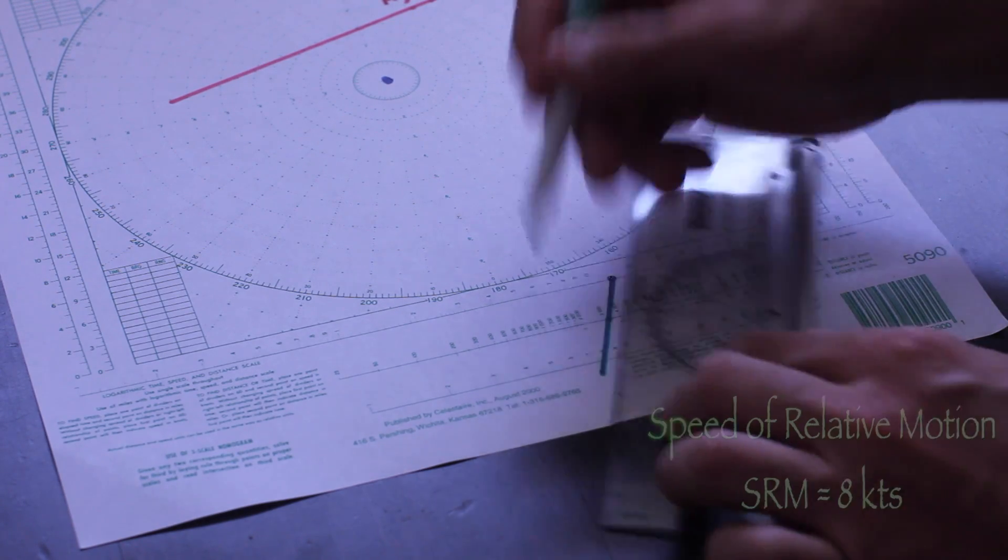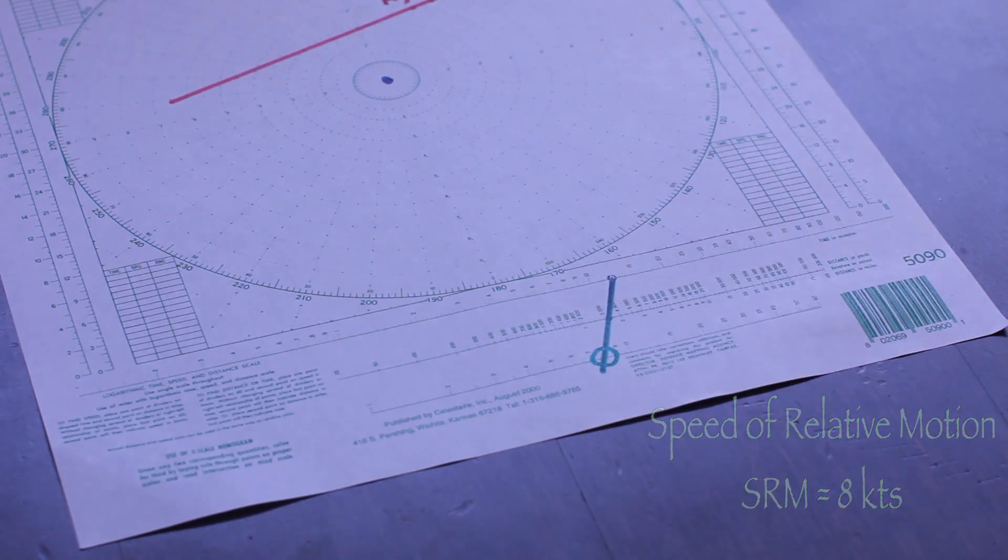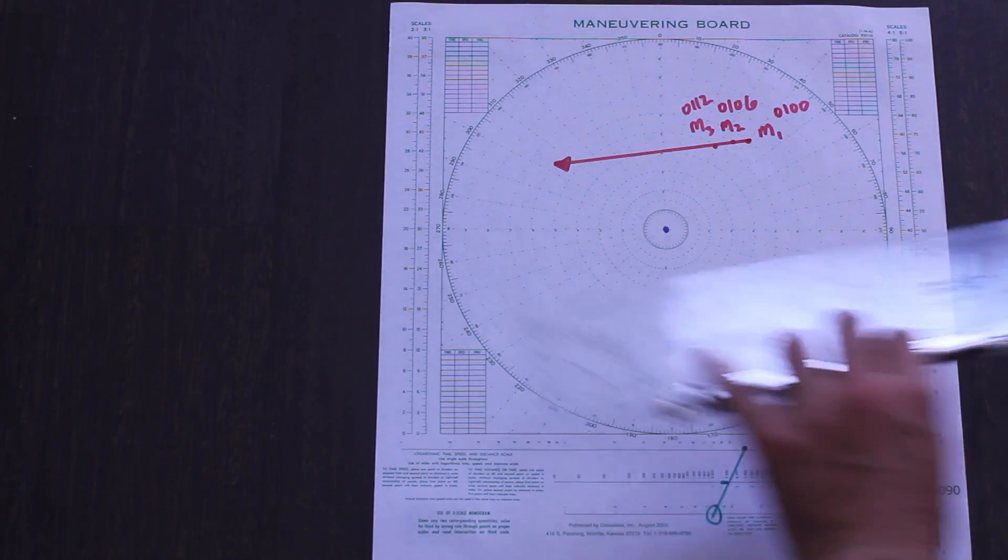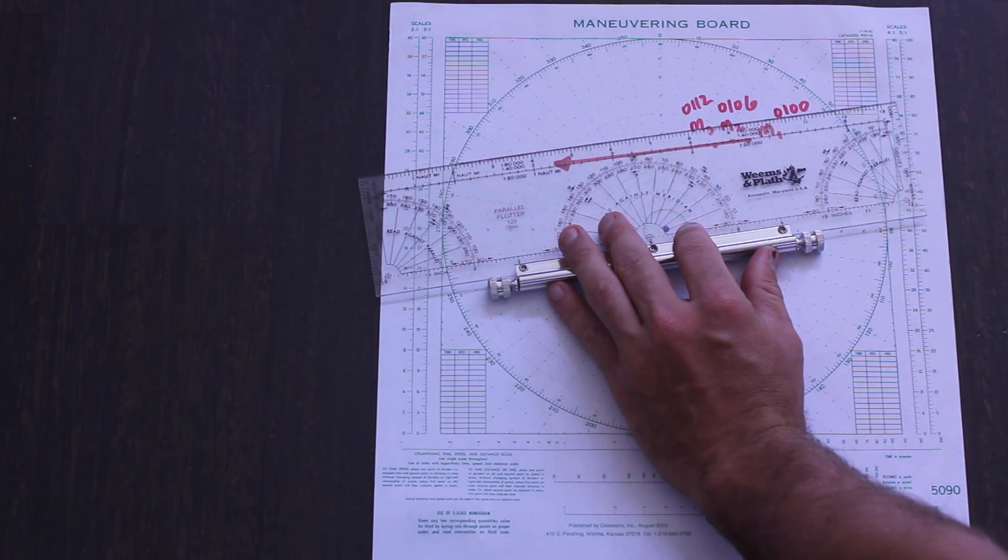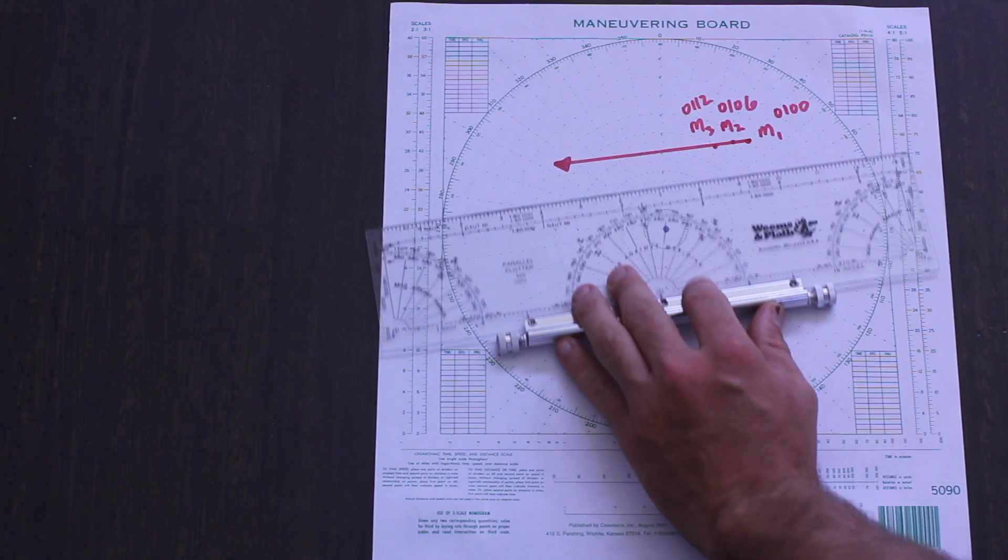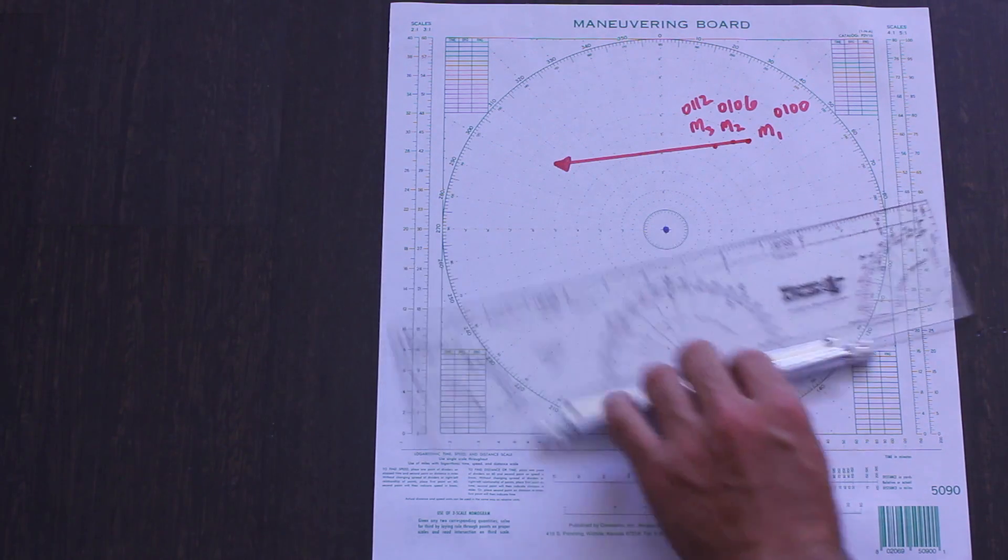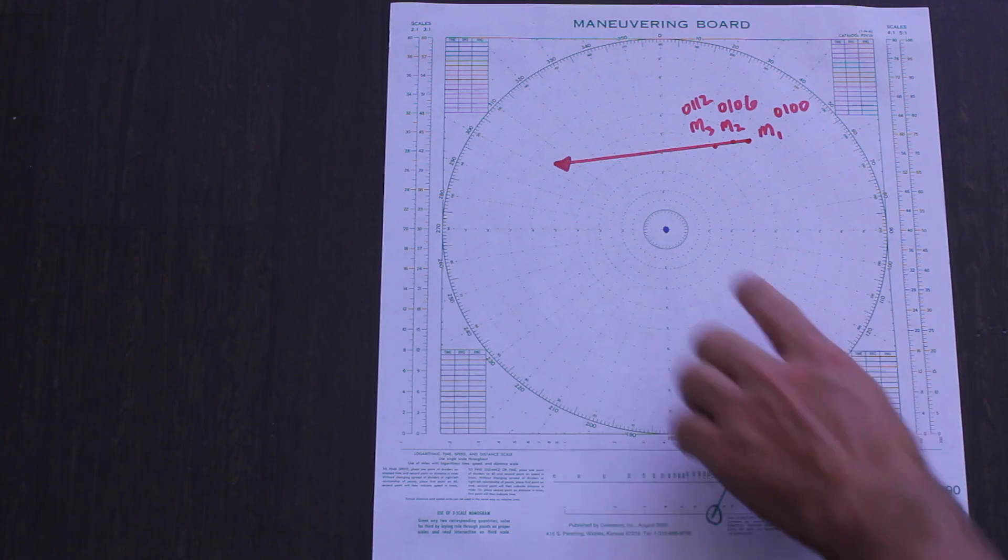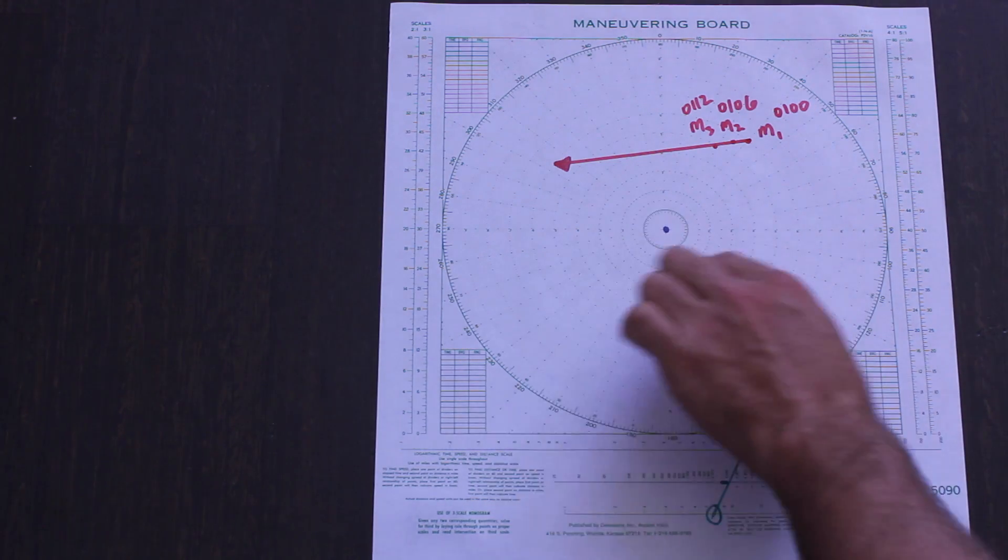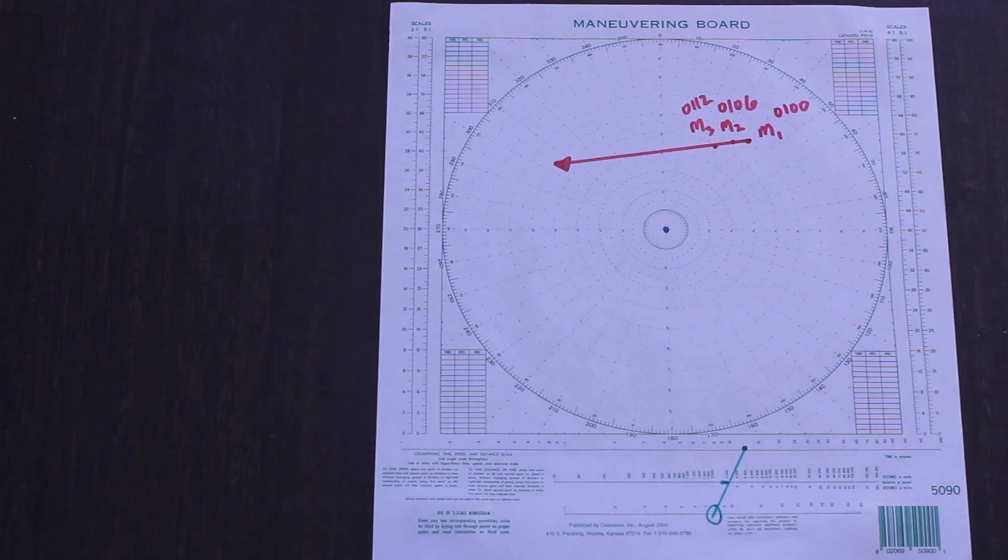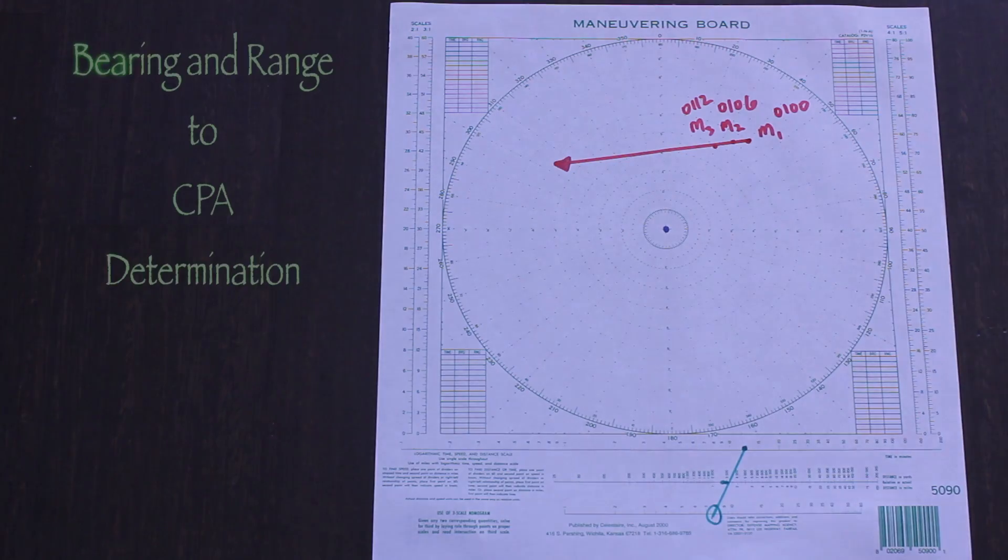We can also easily obtain the direction of relative motion just like last episode, but it is an intermediate step in the process. So what about the bearing and range to CPA? The easiest way to get this data is to find the perpendicular line from the origin to the relative motion line and note the bearing and range.